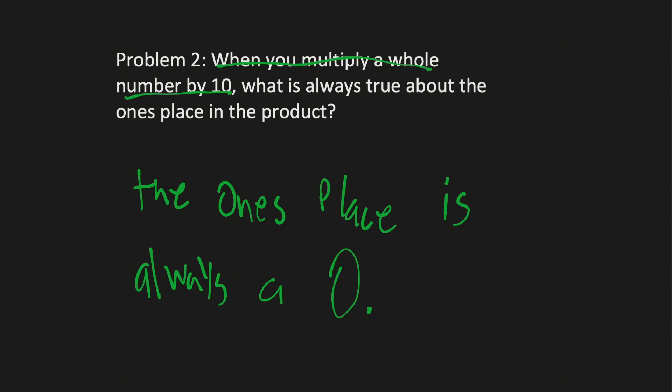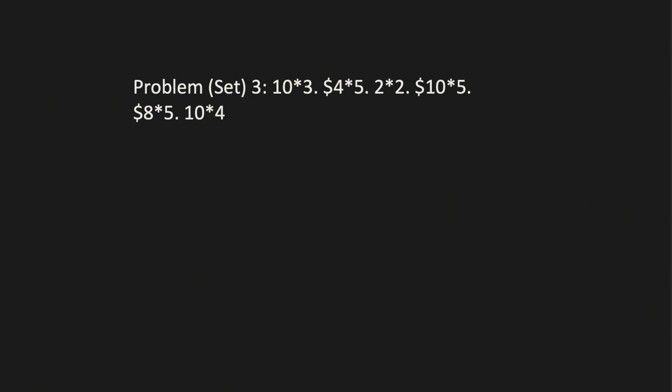Moving on. Problem set 3. We have 10 times 3. 3 times 1 is 3. 3 times 0 is 0. The answer is 30.